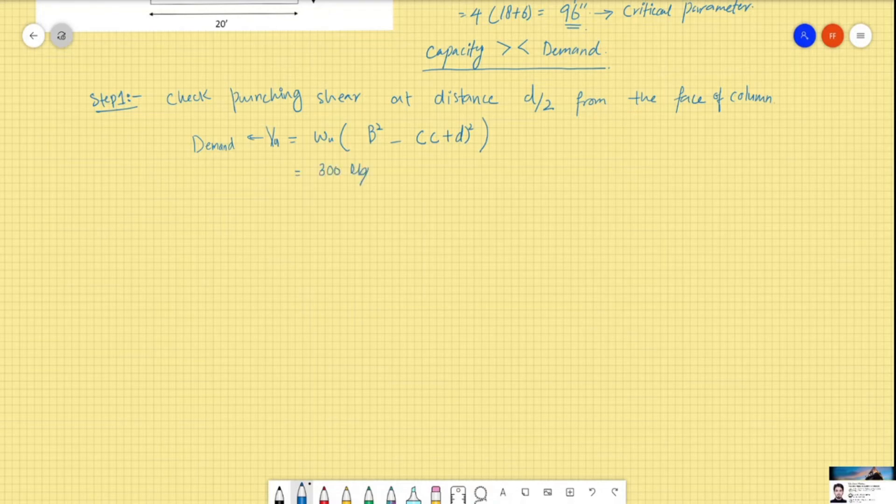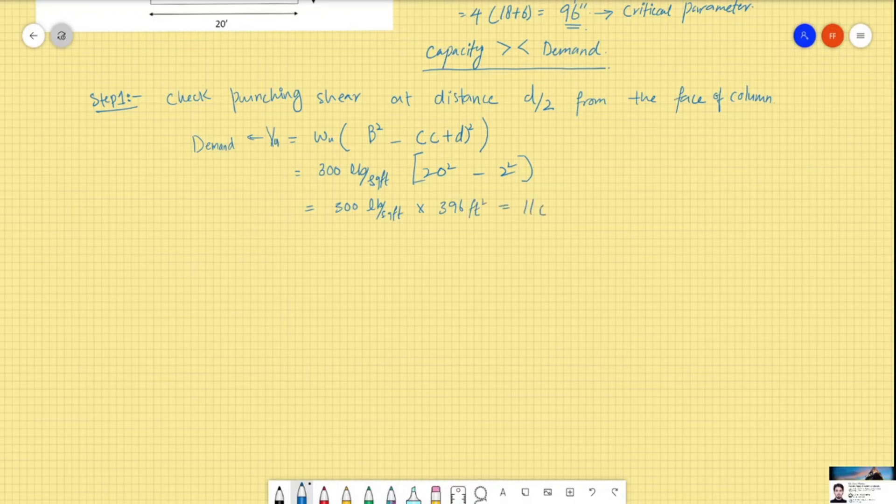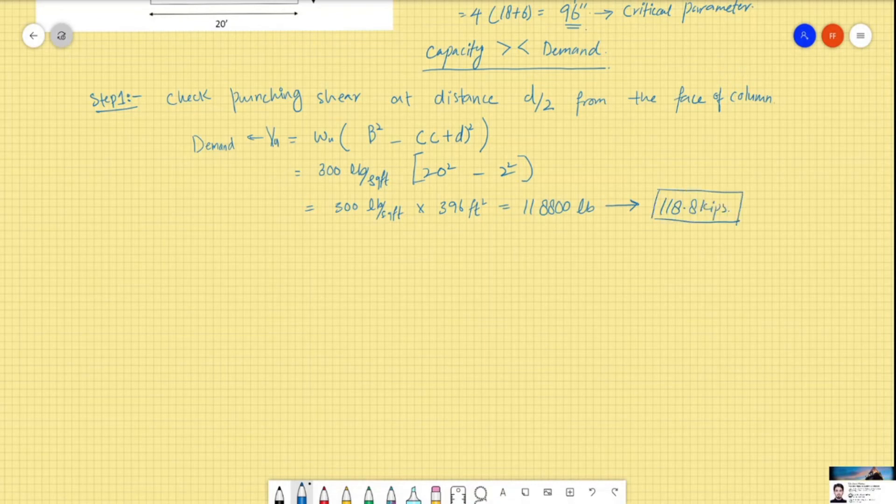So calculating that, we have 300 pounds per square foot multiplied by 396, giving 118,800 pounds or 118.8 kips.